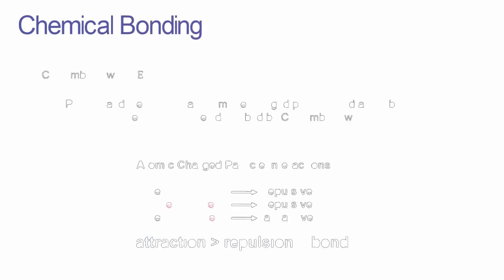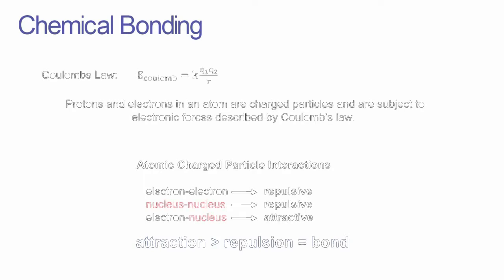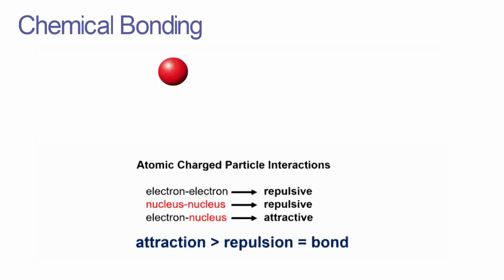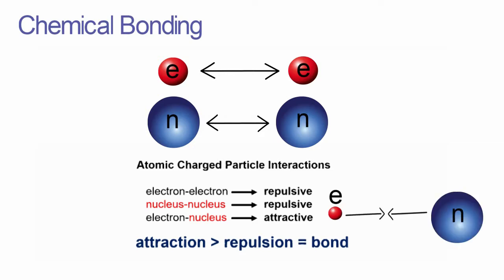Now that we have some of the terminology down, we can move on to bonding concepts. Bonding between atoms is due to the forces described by Coulomb's law. It is enough to know that because protons and electrons are charged particles, they are subject to attractive and repulsive electronic forces. The interaction between two electrons is repulsive, the interaction between two nuclei is repulsive, and the interaction between electrons and nuclei is attractive. If the attraction between two atoms is greater than the repulsion, a bond is formed.